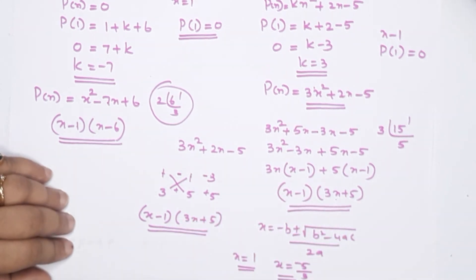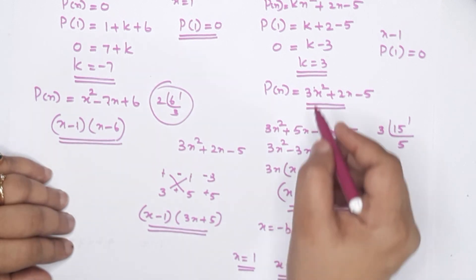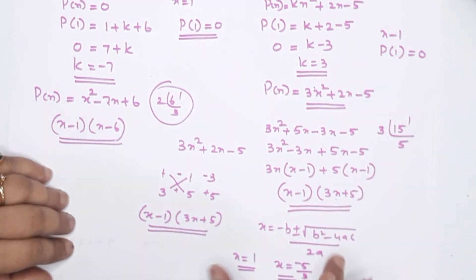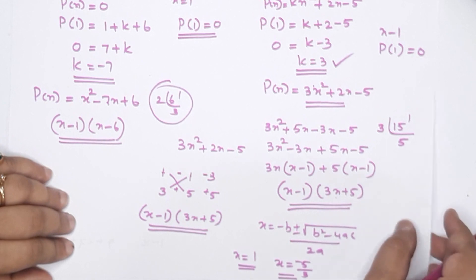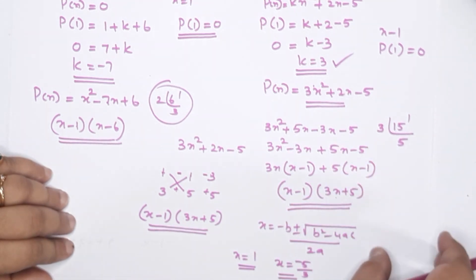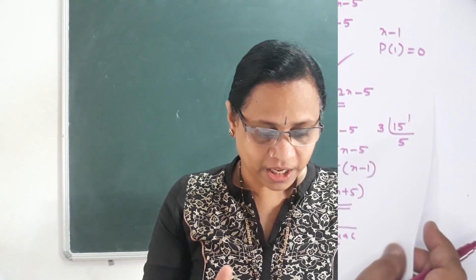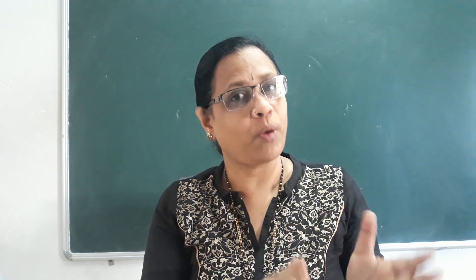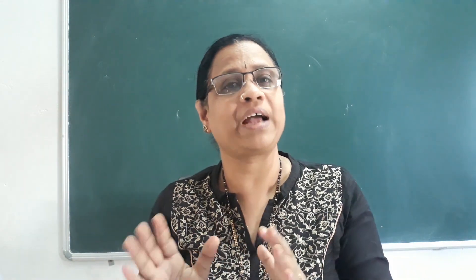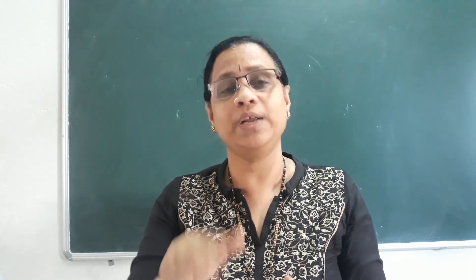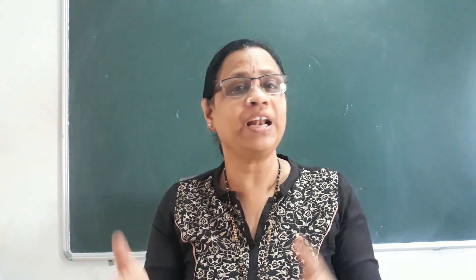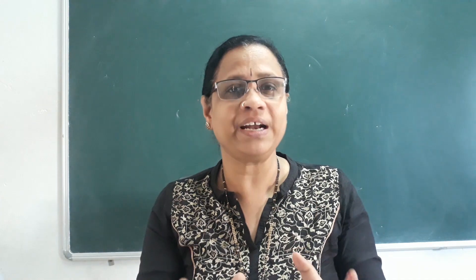We have done the factorization and found the values. Now it is clear. We have completed the problems on page number 240. There are three practice problems in this section, and there are two sections. We will now move to the next section. This is a very simple chapter.